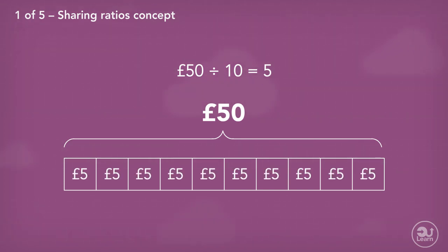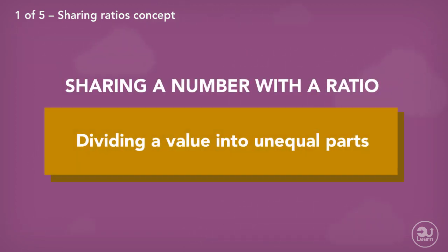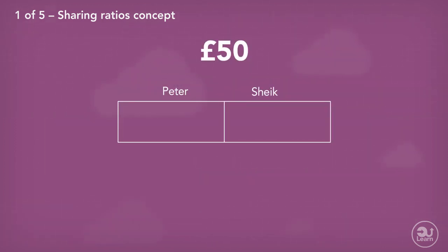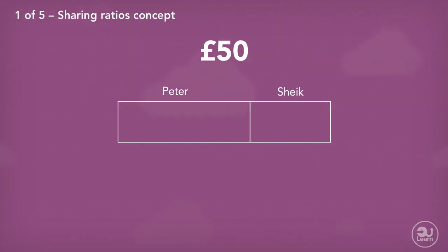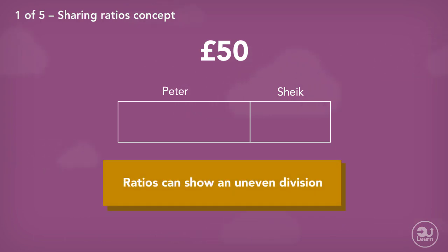When we divide or share by ratio, what we will be doing is dividing an amount into unequal pieces. Think of it like this: you want to divide the same 50 pounds amongst two friends, but you want to give one friend more than the other. Ratios are a way of showing this unequal division mathematically.